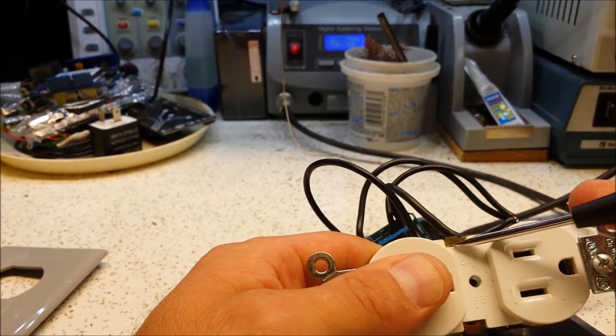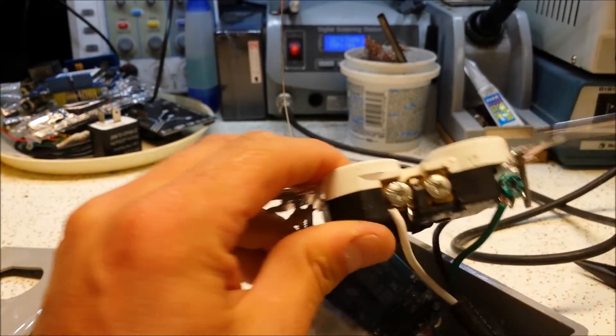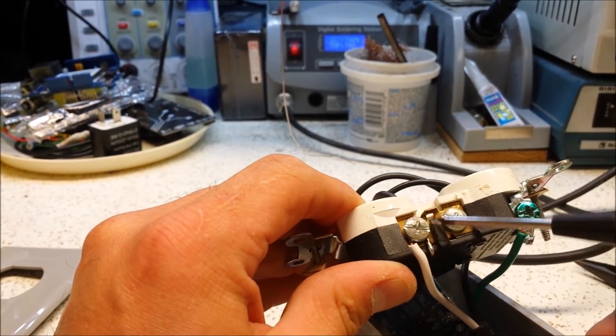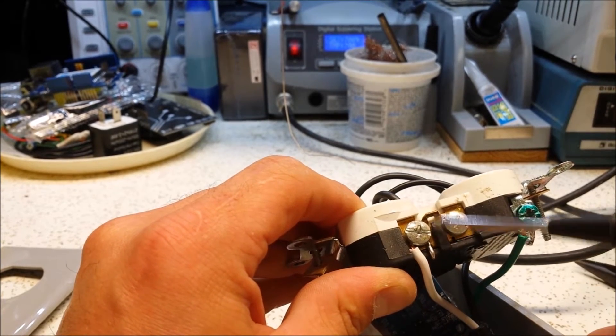Now you'll notice there's these little ears. And what that is, is that as you can see on the neutral, the neutral comes up, it touches this brass or copper plate, whatever it is here, and then runs across this ear to the other side.